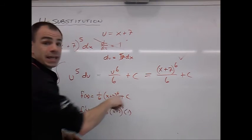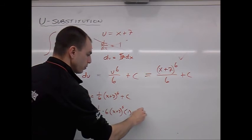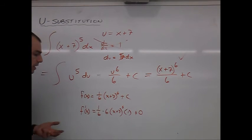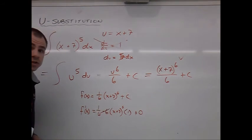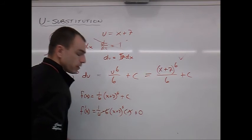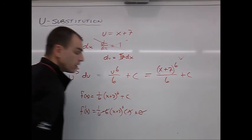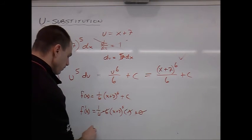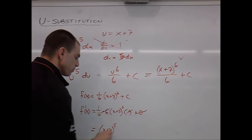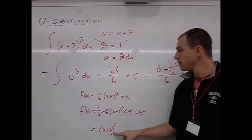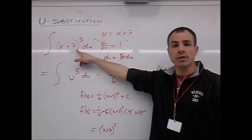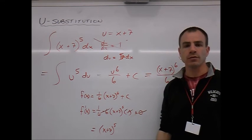The derivative of any constant is 0. I've got a plus 0 there. Now, look what happens. The 6 and the 1 6th wipe out. We don't need to multiply anything by 1. That doesn't need to be there, nor does the plus 0 need to be there. What are we left with? We're left with x plus 7 to the 5th power, and our answer, when we take the derivative, matches with the original problem.